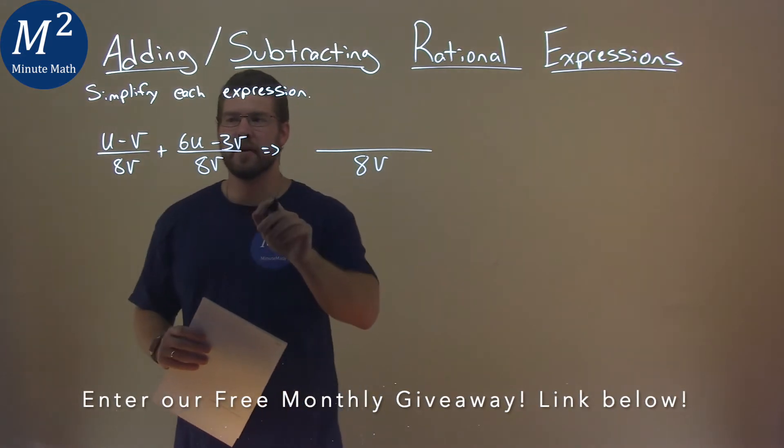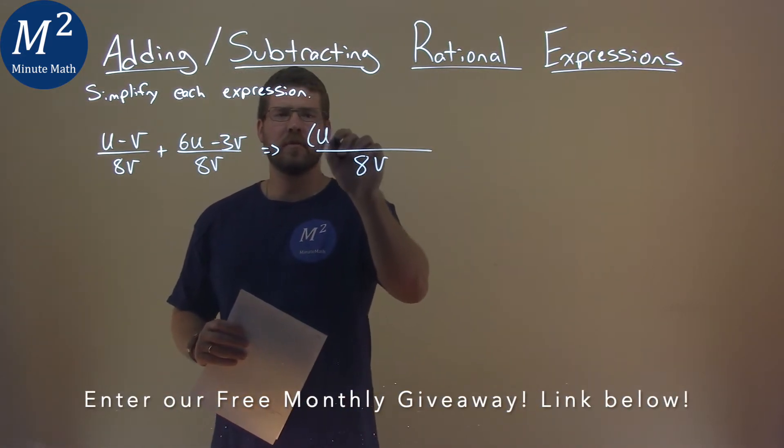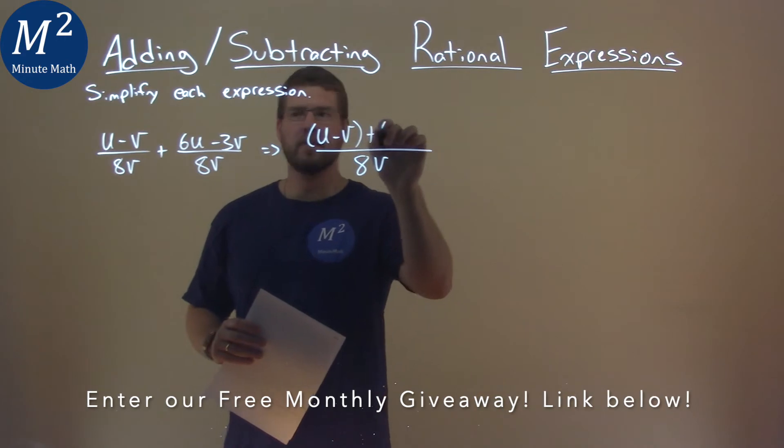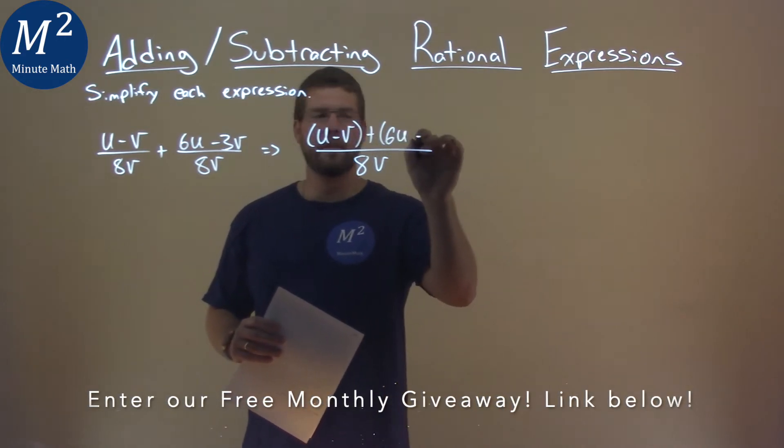We have 8v still in the denominator, and to show it here, we have u minus v plus 6u minus 3v.